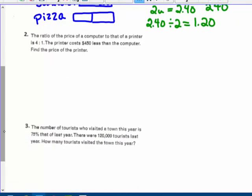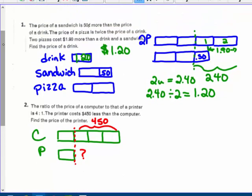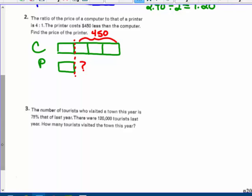The ratio of the price of a computer to that of a printer is four to one. So the computer, this is the computer, to the printer, this is the printer, is a four to one ratio. The printer costs $450 less than the computer. Or another way you could look at it is the computer is $450 more. Find the price of the printer. So here's my question mark. Oh, I don't think I put a question mark up in this problem, by the way. The drink, find the price of the drink. That's what we had to find.